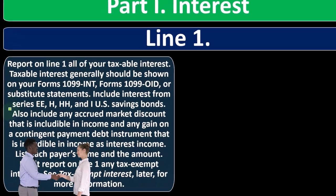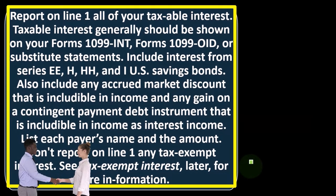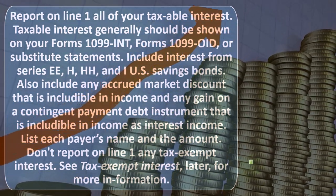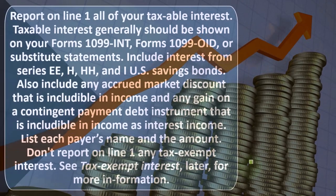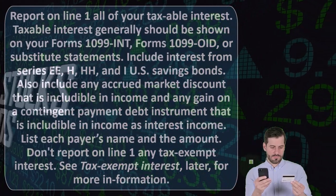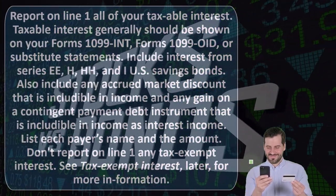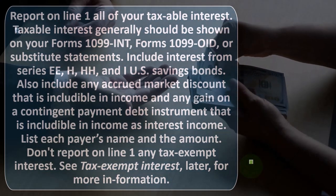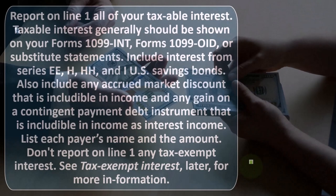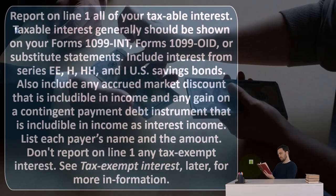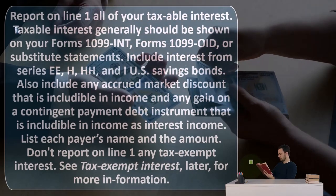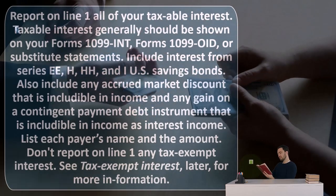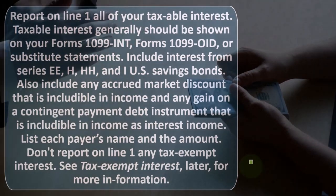For Part 1, line 1 — report all taxable interest. This typically comes from Form 1099-INT, Form 1099-OID, or substitute statements. Include interest from EE, HH, and I US savings bonds. Also include any accrued market discount includable in income and any gain on a contingent payment debt instrument includable as interest income. Bond calculations can get complex, especially when purchasing at a premium or discount.